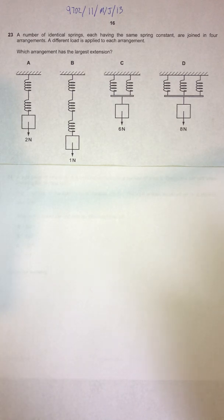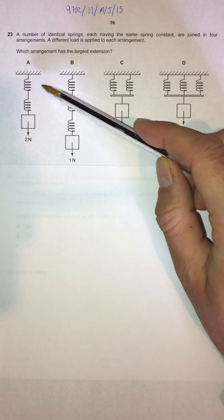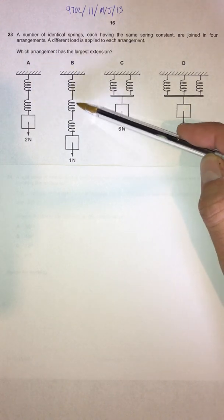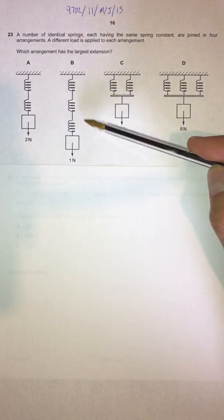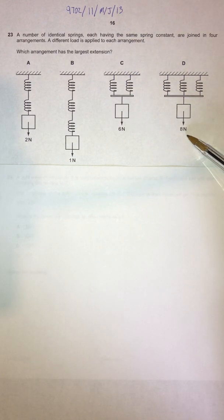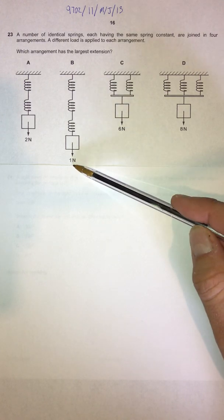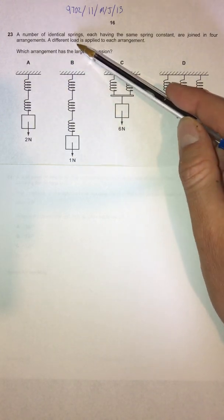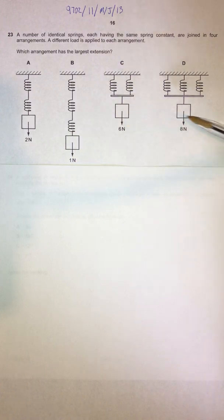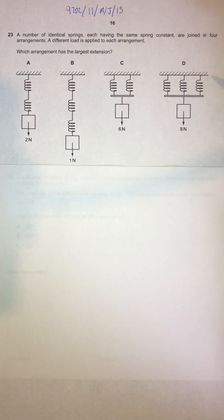This question is really about putting springs in series, like we see in A and B, and putting them in parallel, like we see in C and D. You can see that a different load — two newtons, one newton, six newtons, eight newtons — a different amount of weight is being suspended from each one of those spring arrangements.